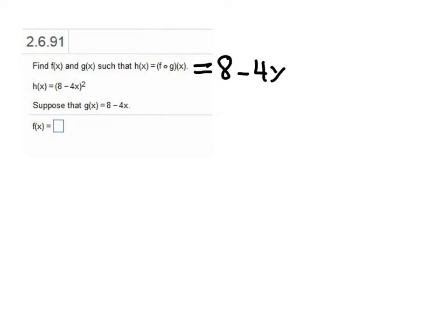We're being asked for the component functions f and g. They're giving us a hint that we're not actually having to determine both component functions. We're given that g(x) = 8 - 4x, and we are asked to find f(x) such that f composed with g(x) gives us (8 - 4x)².